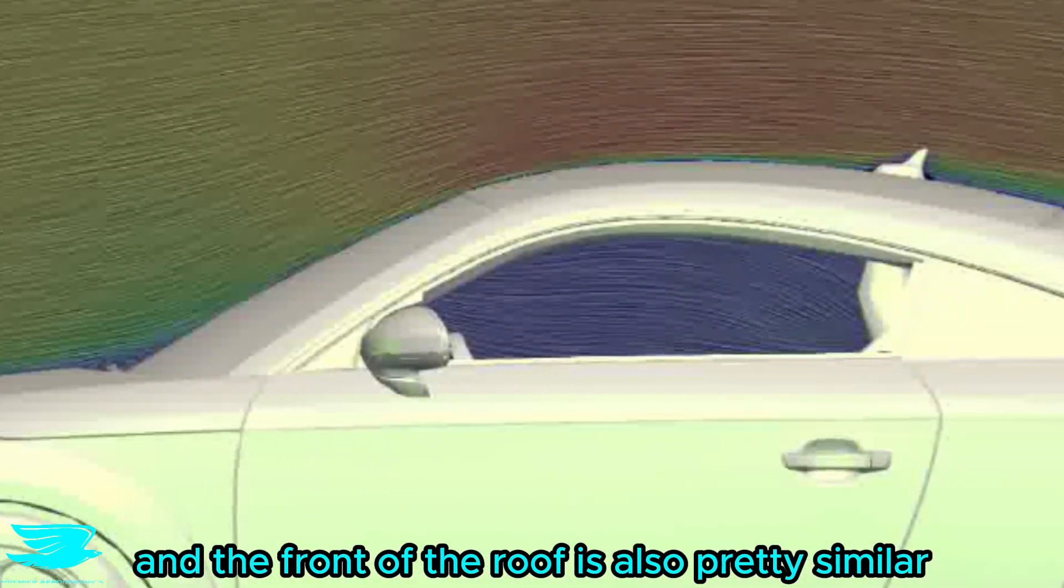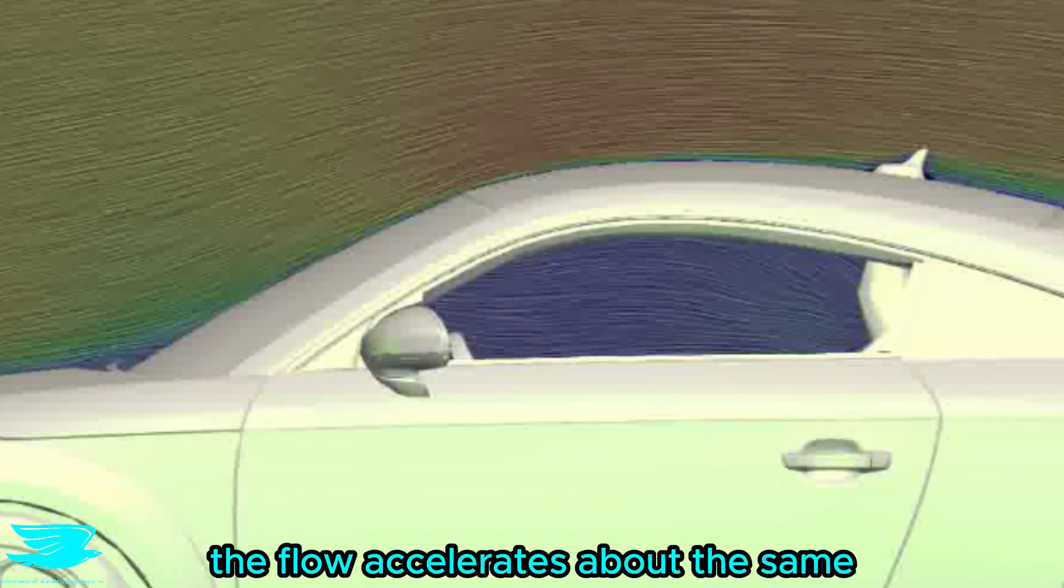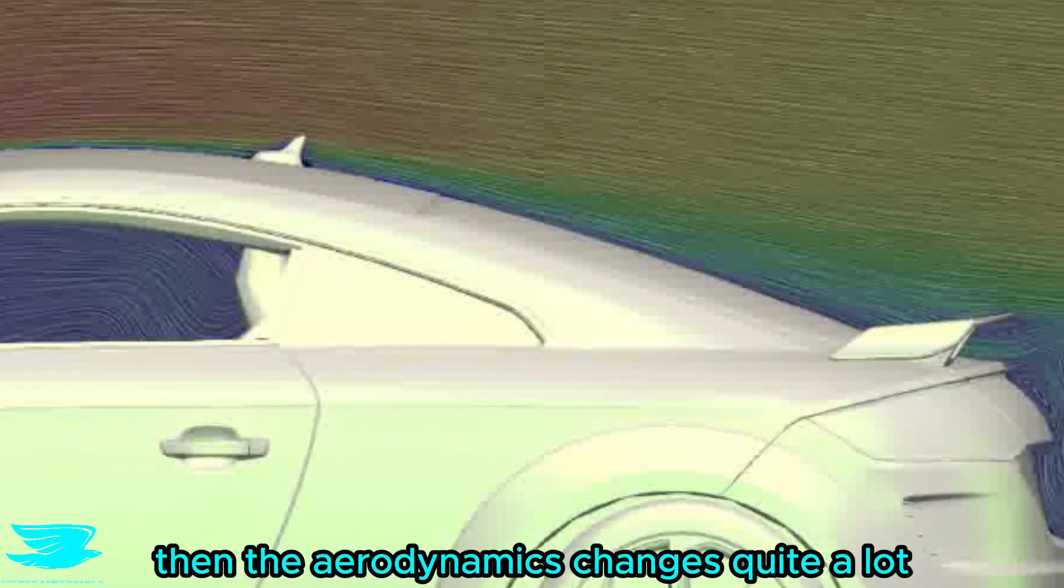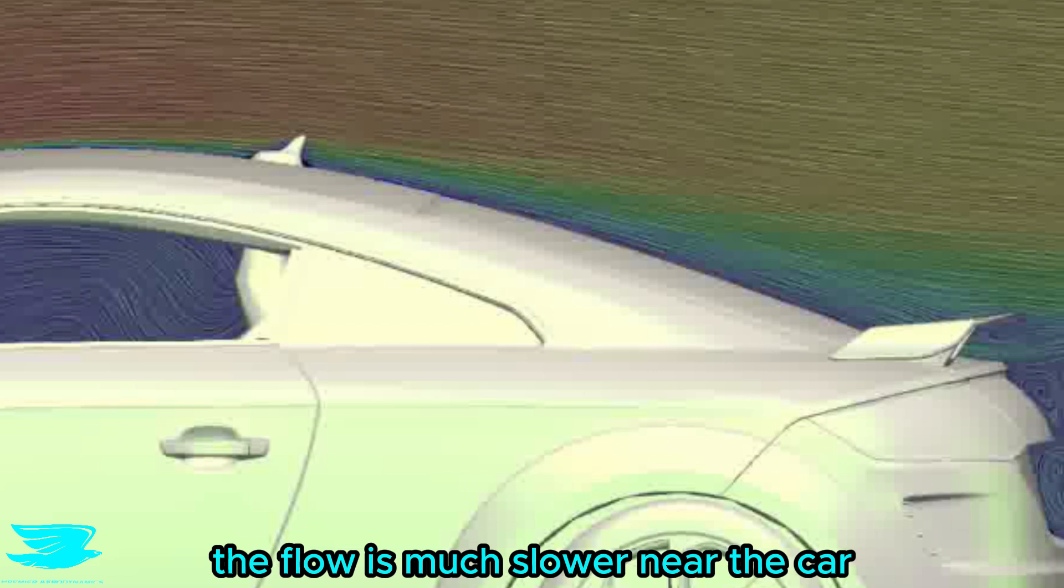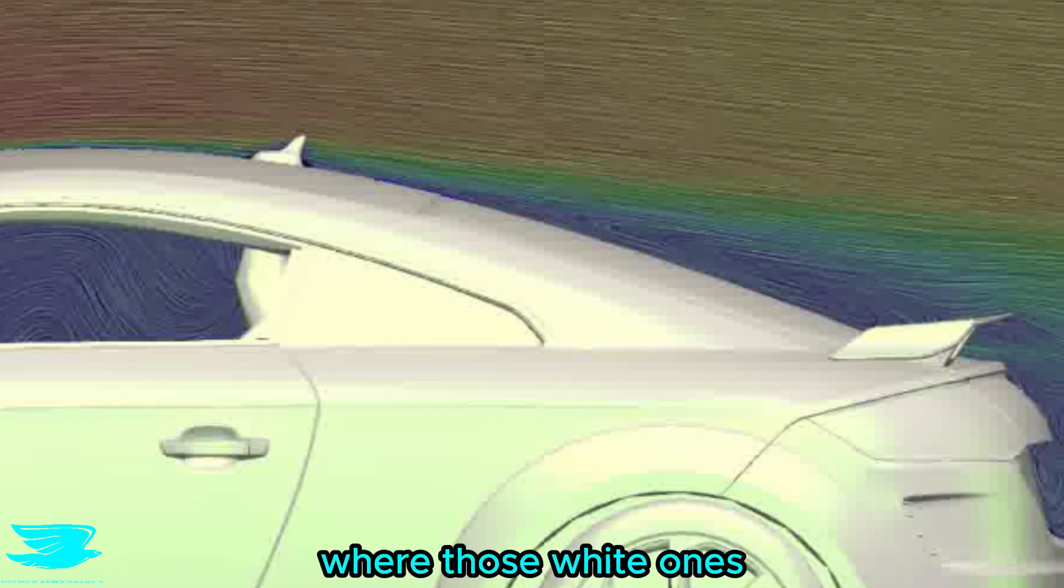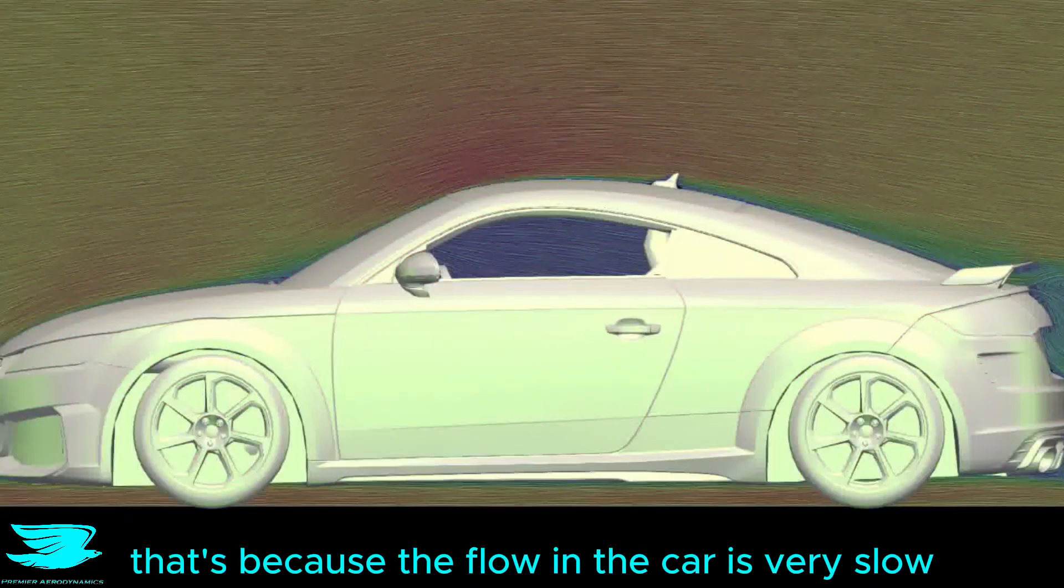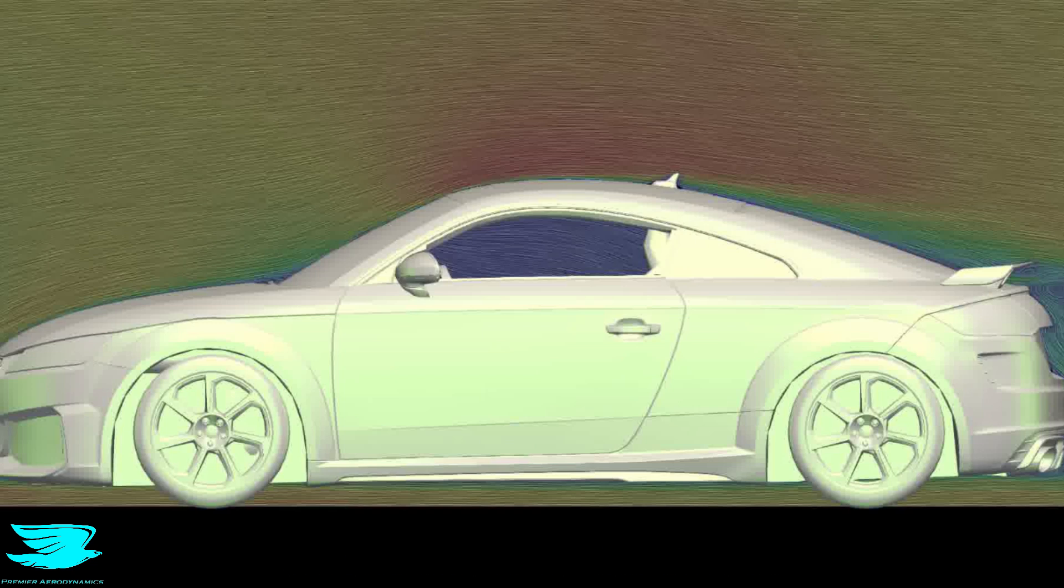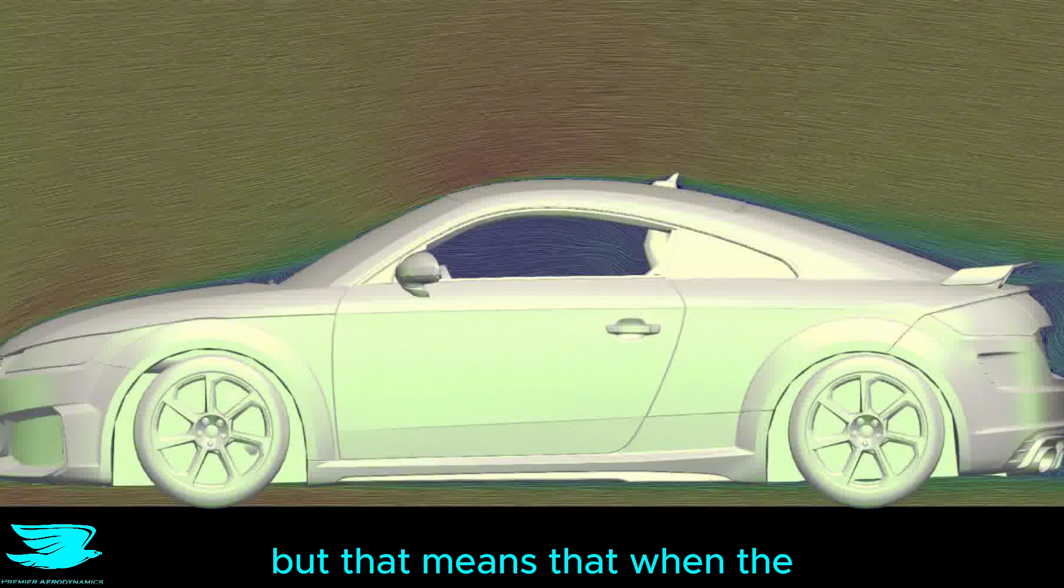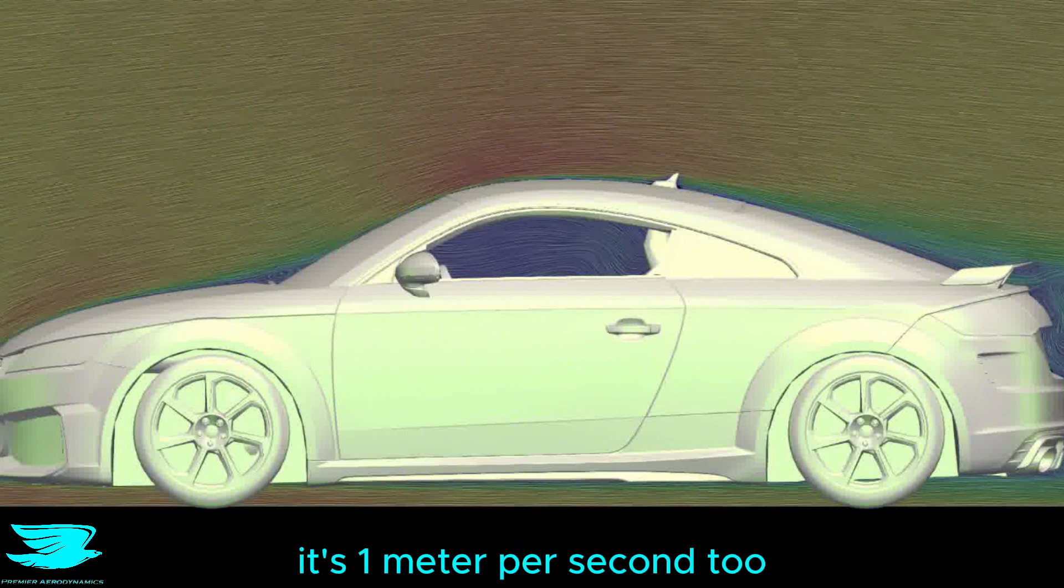And the front of the roof is also pretty similar. The flow accelerates about the same, but once it gets past the roof, then the aerodynamics changes quite a lot. The flow is much slower near the car when the window is gone. And given what we saw with the streamlines, where those white ones whipped out of the window and over the back, this makes a lot of sense. That's because the flow in the car is very slow. We can see here that it's like one meter per second or so, which is great for comfort, but that means that when the flow comes out of the car, it's one meter per second too.